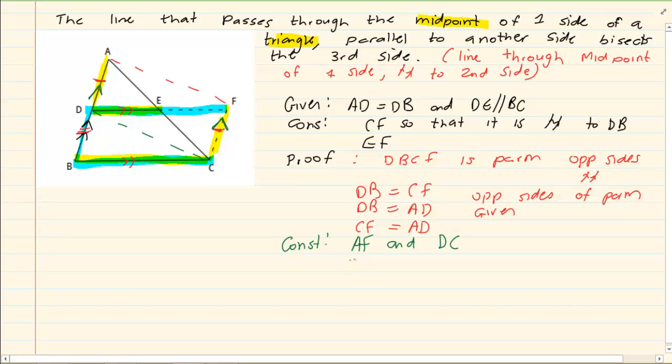So what can we see? We can see that AFDC is a parallelogram. Why? Because one side is equal and parallel.